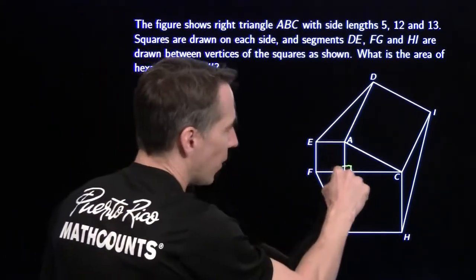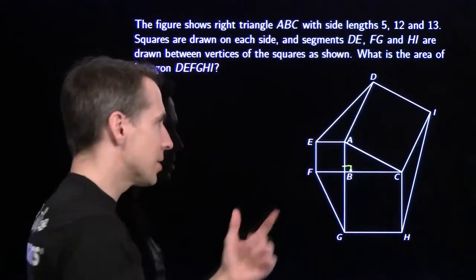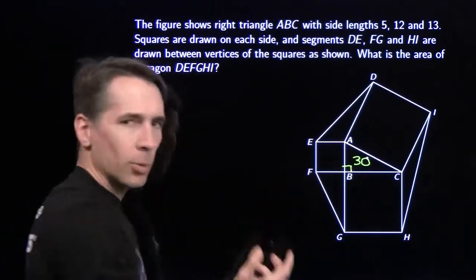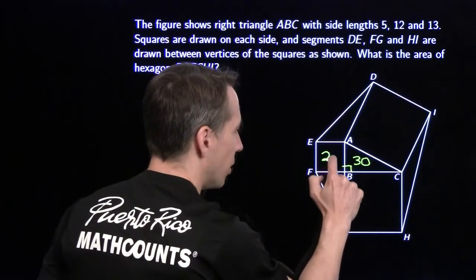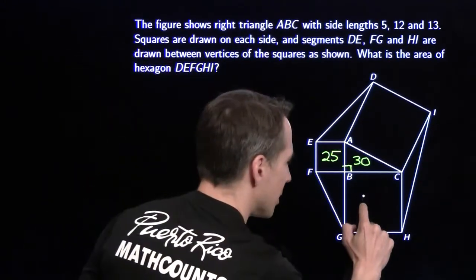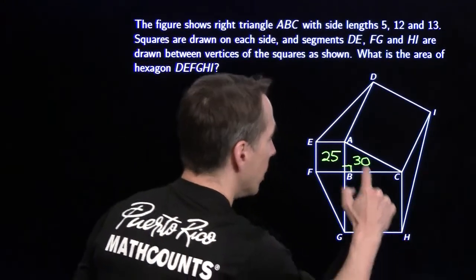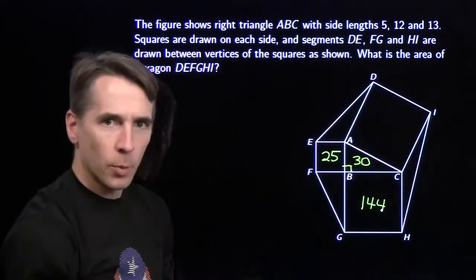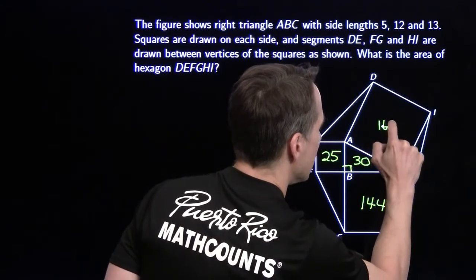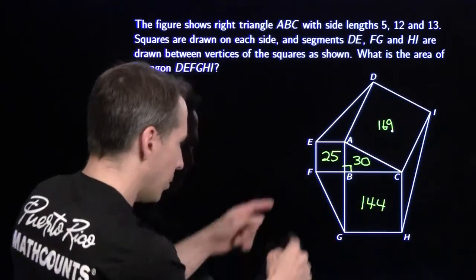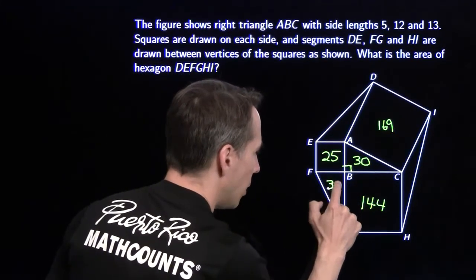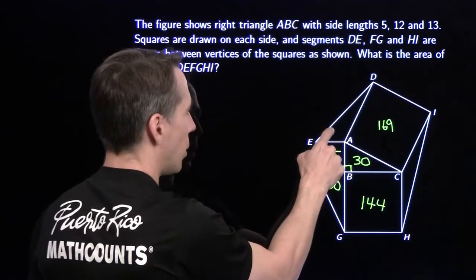Well, this piece right here, this is 5, this is 12. 5 times 12 is 60. Half that gives us 30, the area of that triangle. This is a square with side length 5, this is 25. This is a square with side length 12, so its area is 144. And then up here we have a square with side length 13, so its area is 169. And we have a right triangle over here. This side is 5, this side is 12. Its area is 30 as well.